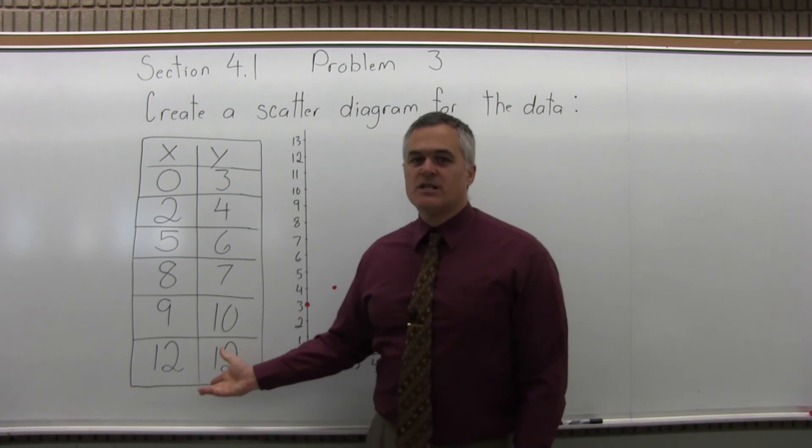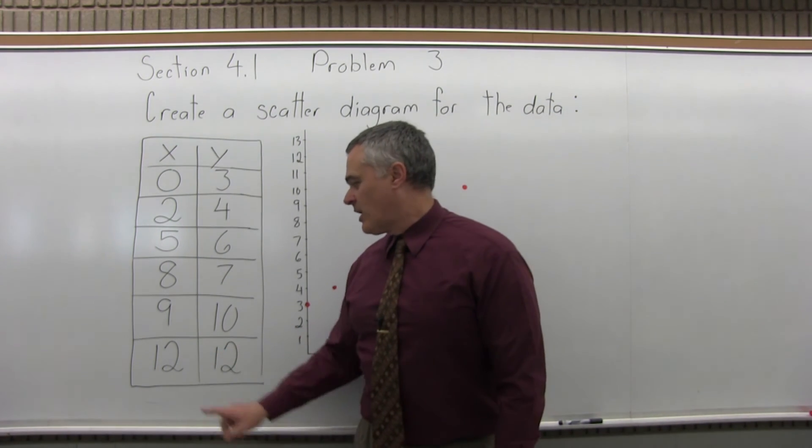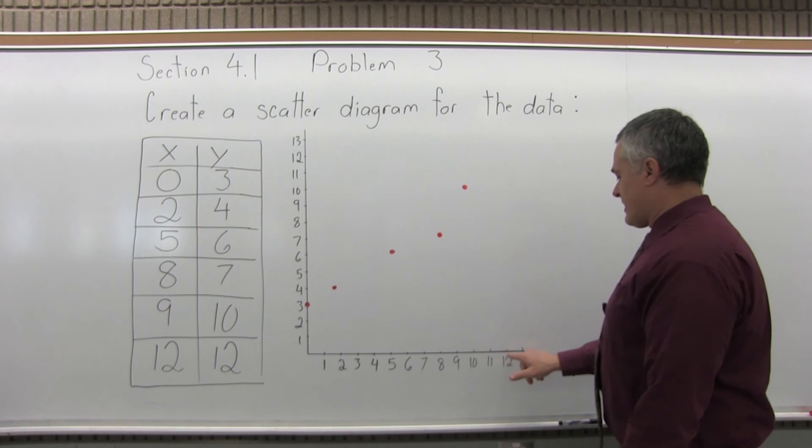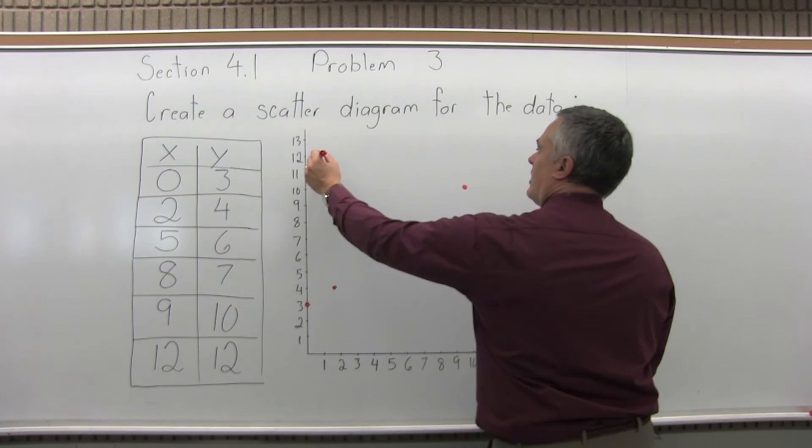Something like that. And finally, the last point is 12, 12. 12 for x, 12 for y. So over 12 for x, up 12 for y.